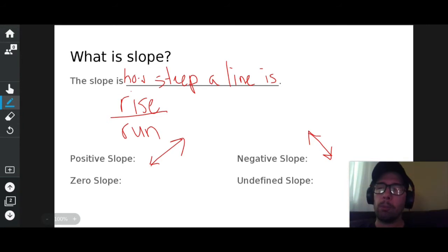Zero slope is perfectly horizontal. And an undefined slope is a slope of a line that goes up and down.